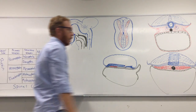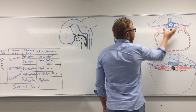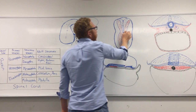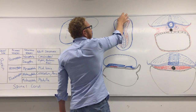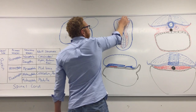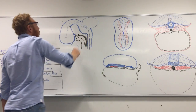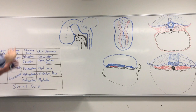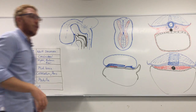To summarize learning outcome one: we saw how the neural plate forms, how it starts to crest up, closes in the cervical region, zips shut cranially and caudally at about day 25 and day 27, and how the three vesicles form and further manifest. Now we move on to learning outcome two.